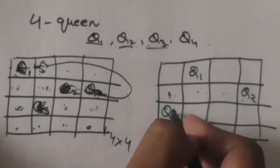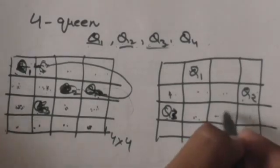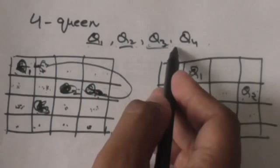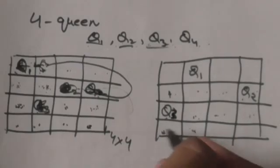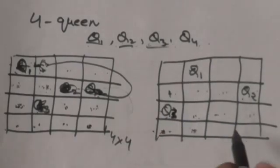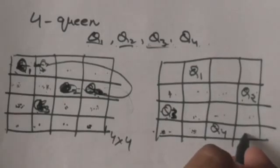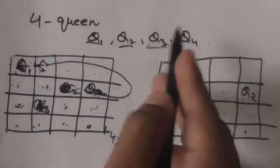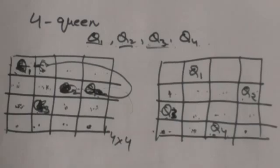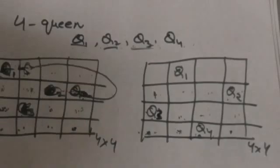Q3's only option in the third row is a specific square — placing it in the first square gets attacked by Q1, and placing it in the other squares gets attacked by Q2. Now we place queen Q4 in the fourth row. Placing Q4 in the first two squares gets attacked by Q3, and placing it in the last square gets attacked by Q2. But placing it in the third square results in no attack from any queen. So we place Q4 there. All four queens Q1, Q2, Q3, and Q4 are now placed on the 4 by 4 chess board with no two queens attacking each other.